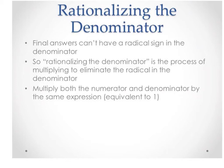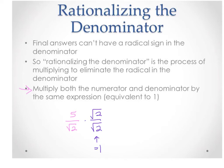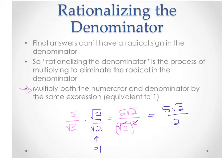If your final answer has a radical sign in the denominator, you have to rationalize the denominator. The way we do that is to multiply the numerator and the denominator by the same expression. For example, if we have 5 over the square root of 2, we multiply by the square root of 2 over the square root of 2, which equals 1 — so we're not changing the fraction. On top we get 5 square root of 2. On the bottom, square root of 2 times square root of 2 is the square root of 4, which equals 2, and a square root and a square cancel. We get 5 square root of 2 over 2 — no longer a square root in the denominator.